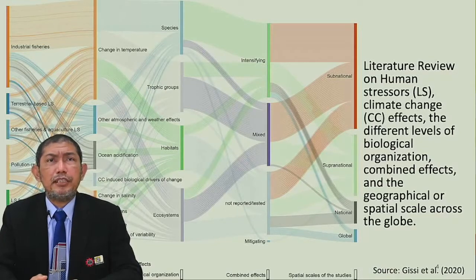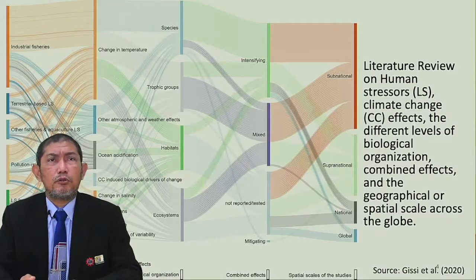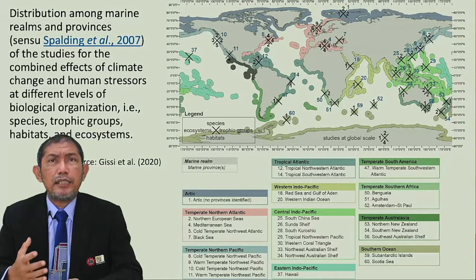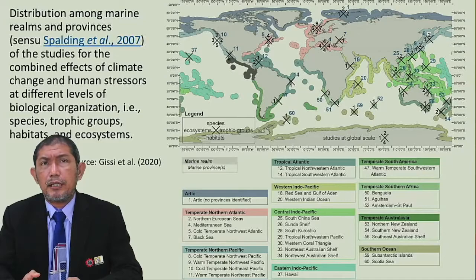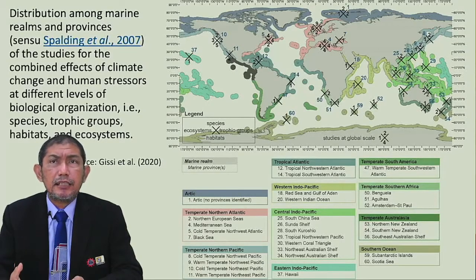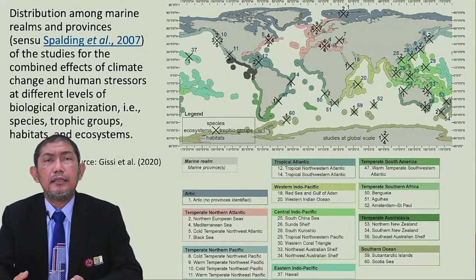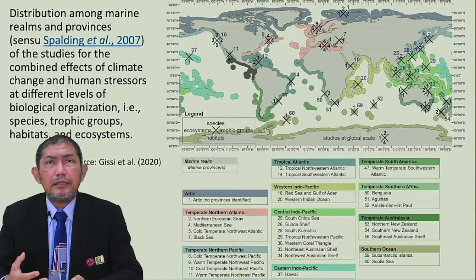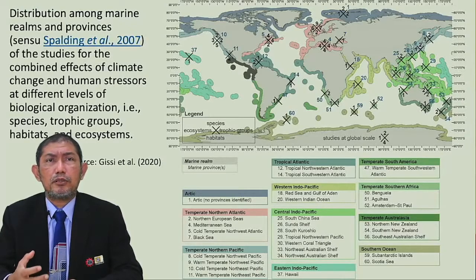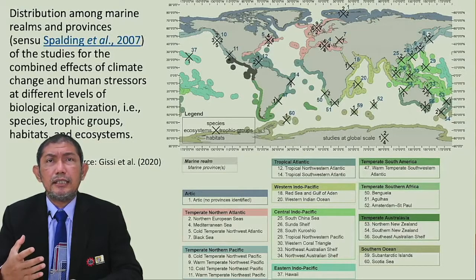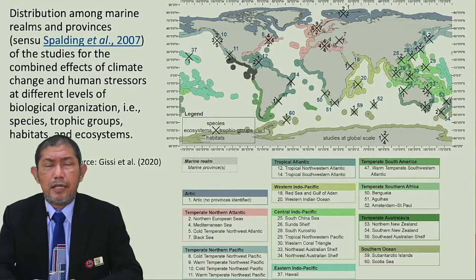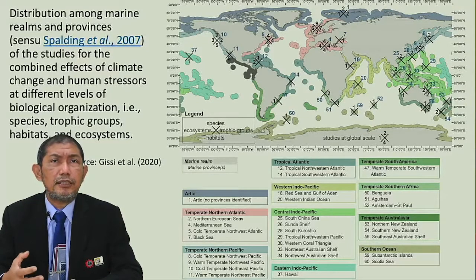Climate change impacts on biodiversity, ocean acidification, ecosystems, and species are occurring massively. Several studies report that climate change impacts on tropical biology is a determined research area being carried out by many scholars globally. Based on Gizi et al. 2020, a dominant effect on biodiversity in coastal and marine areas occurs in almost all regions around the world. This shows that climate change can have a significant impact on species, habitat, and ecosystem biodiversity.